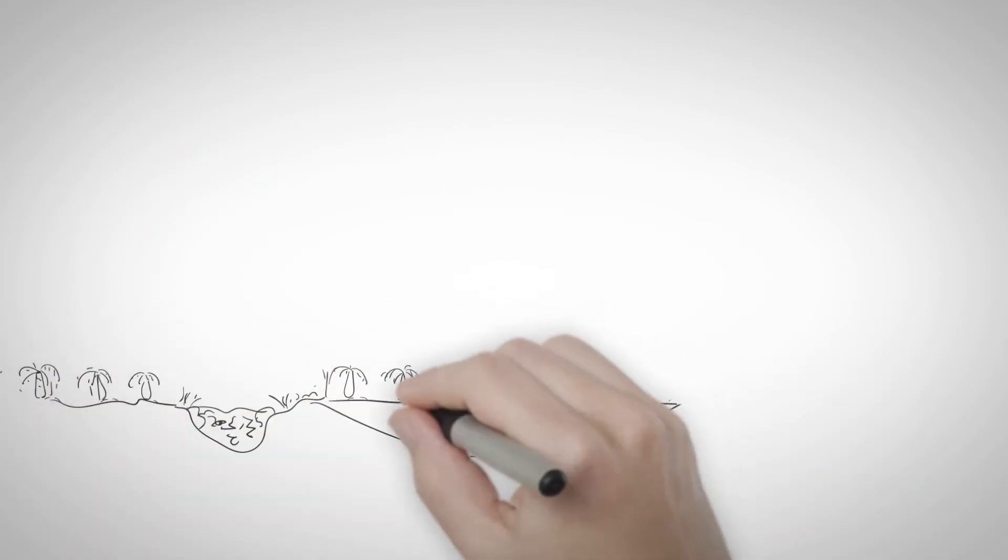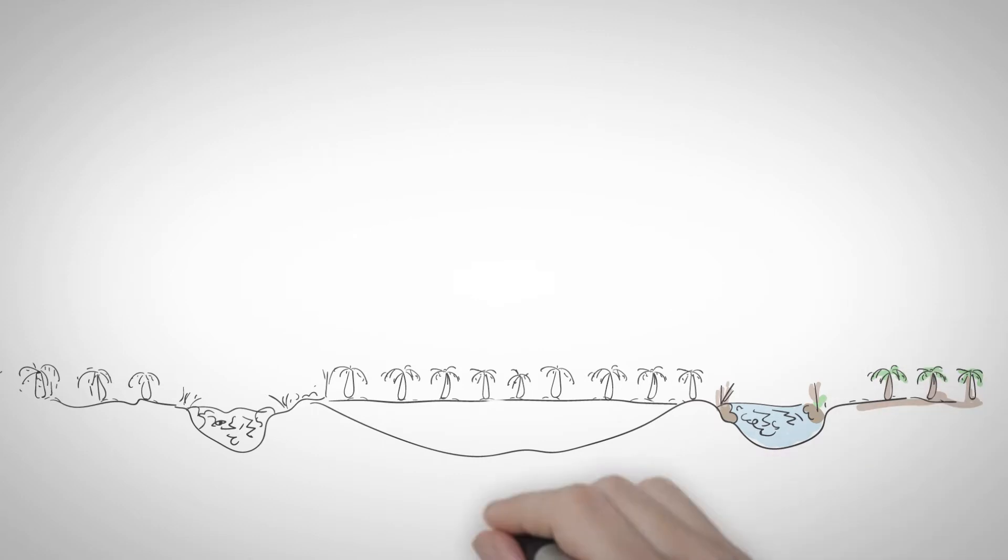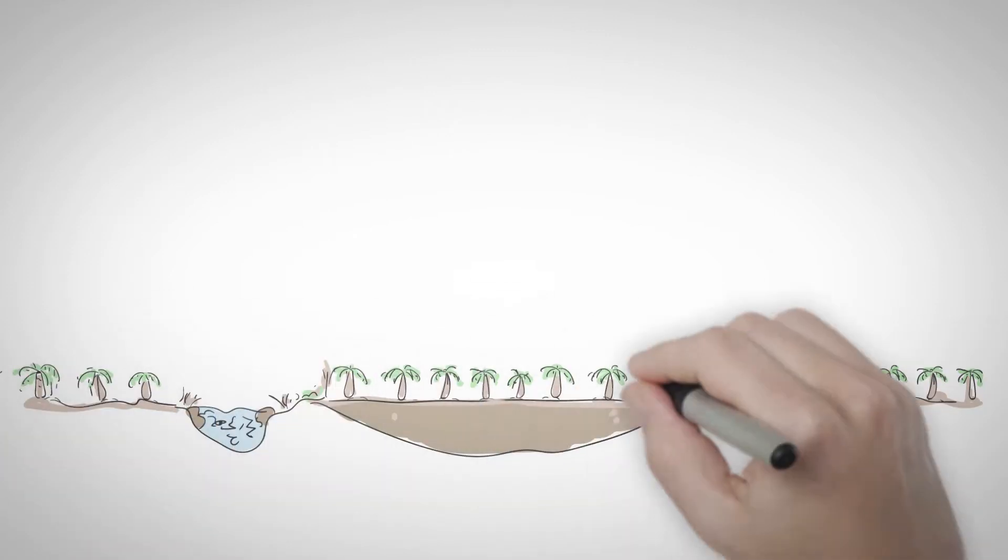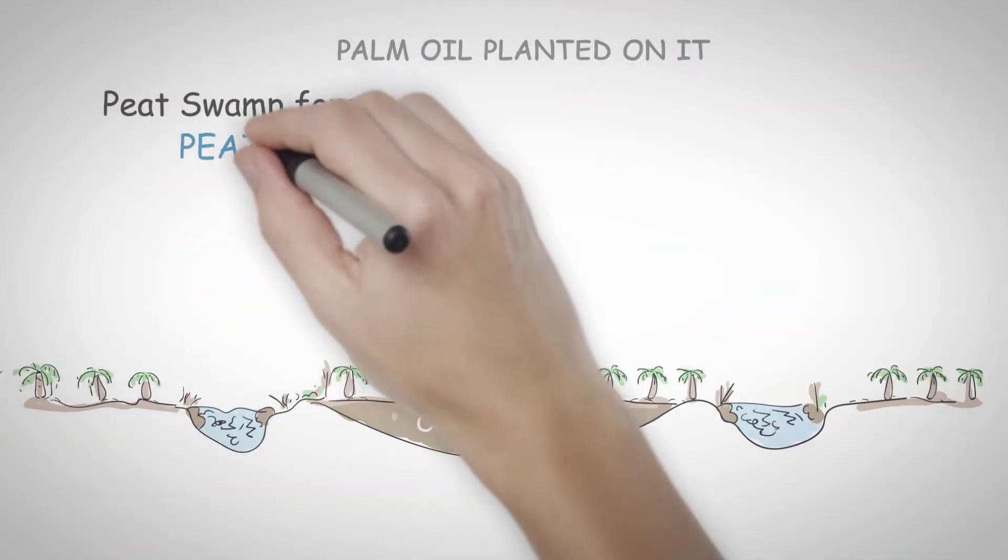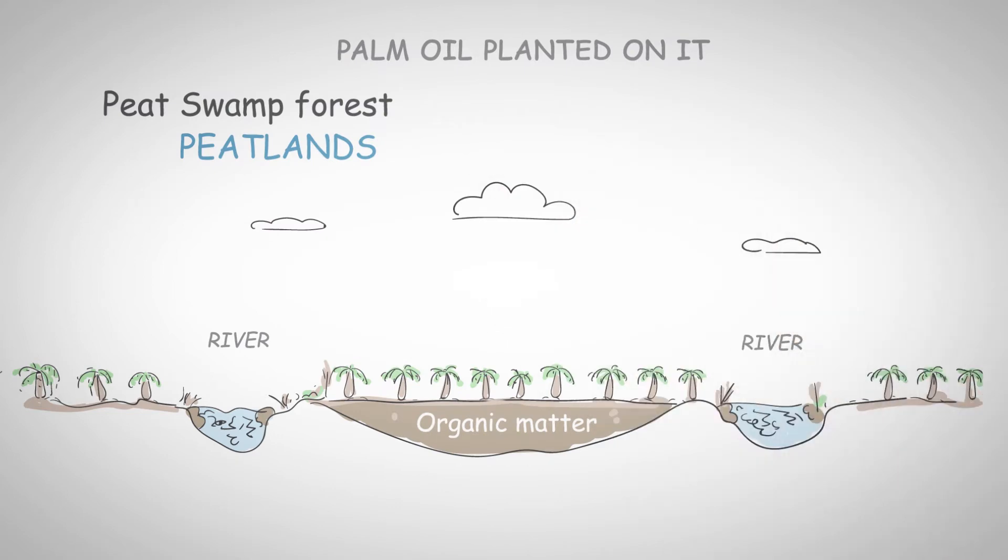It was not until the 1980s, after years of experimentation, development of new technology and promotional efforts from the government, that oil palm was grown successfully on peatlands.